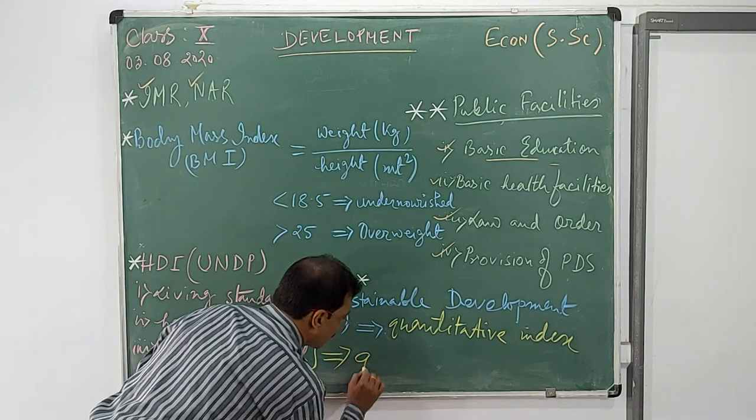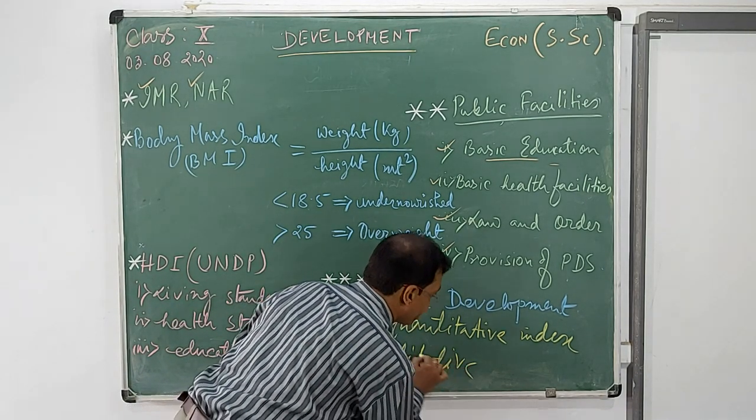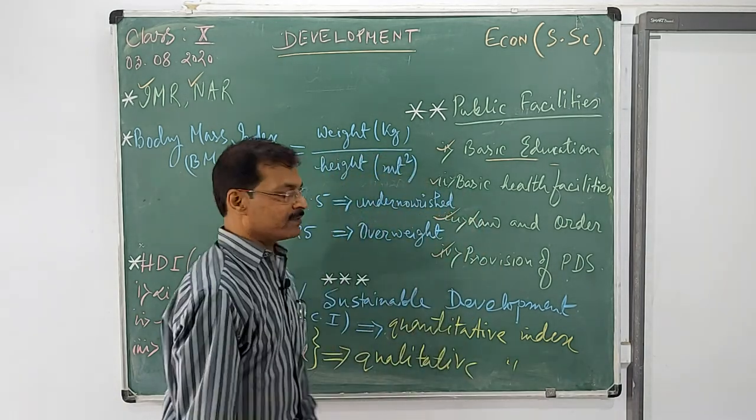Literacy rate, gross enrollment ratio, net attendance ratio, all this. So these two together we can say are the qualitative indices.